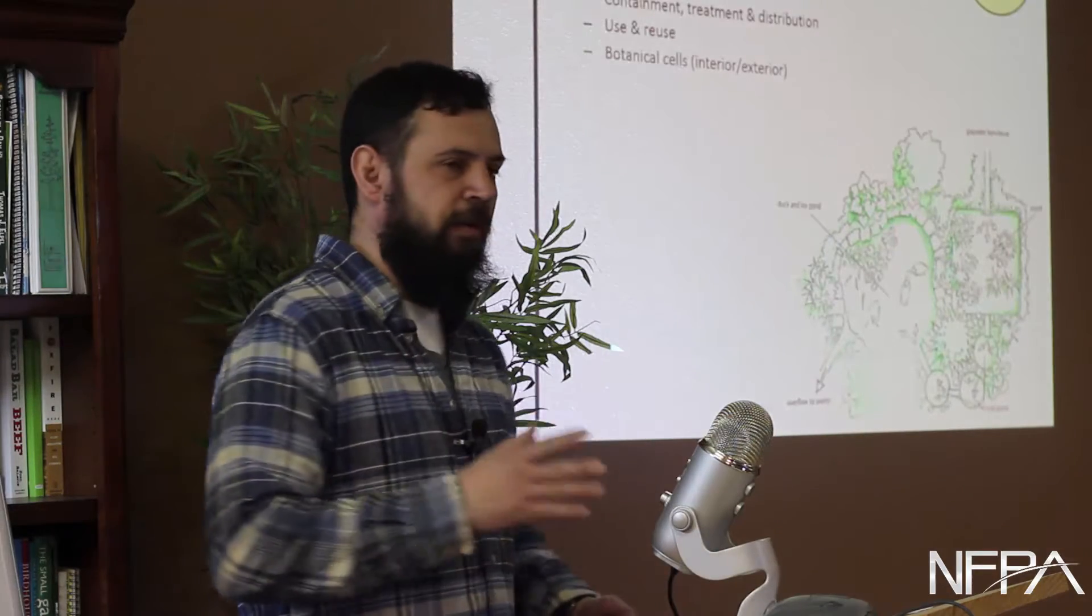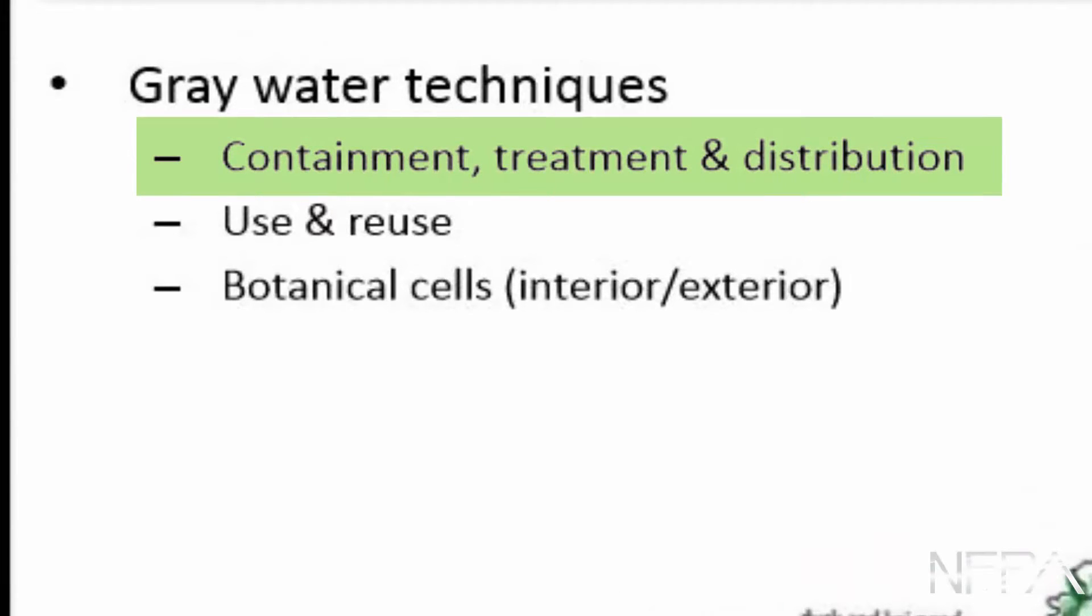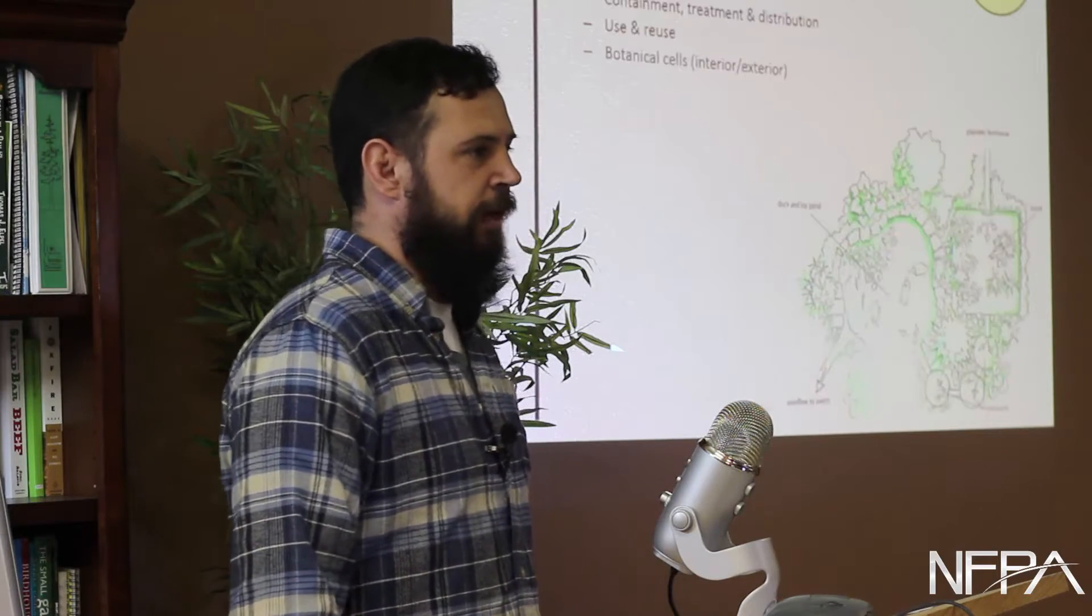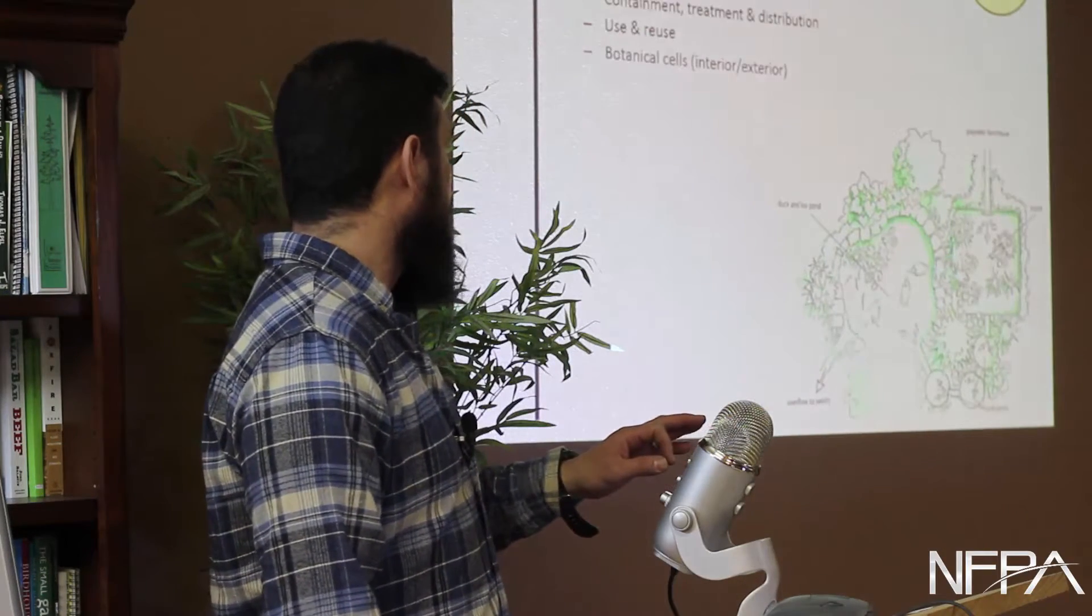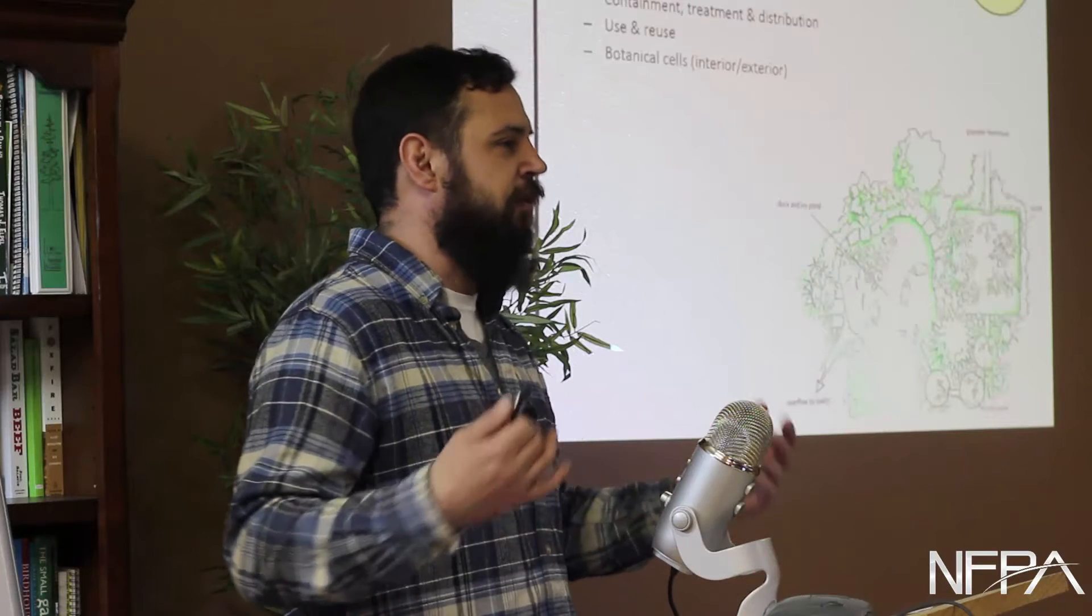Containment, treatment, and distribution. You want to contain your greywater, treat it if necessary. And for us, treating it means letting it run through reeds and cattail. It's called a botanical cell. All that means is just plants. You're using plants to filter water.